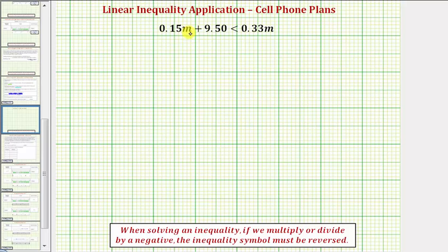Notice we have M terms on both sides of the inequality. To solve for M, we need the M terms on one side. But because on the left side we also have this constant, let's go ahead and subtract 0.15M on both sides of the equation.